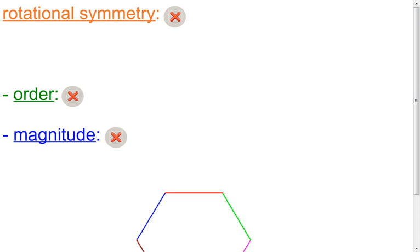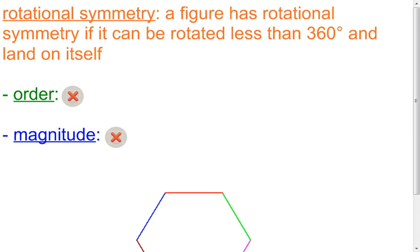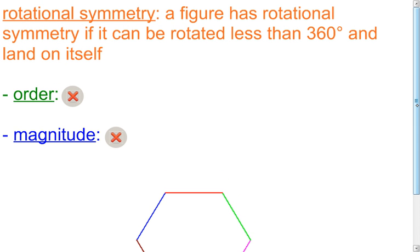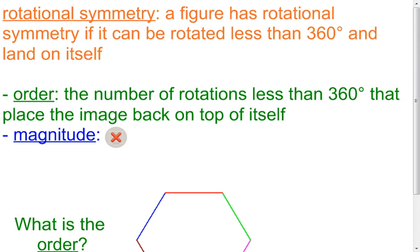Now the next thing dealing with rotations would be rotational symmetry. Rotational symmetry is when you take a figure and you rotate it some degree, less than 360 degrees, and that figure will land on top of itself. So what I have here is I have an example of something that has rotational symmetry. This regular hexagon has rotational symmetry.